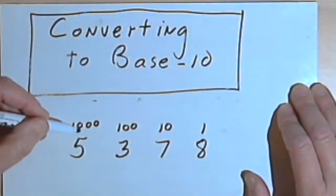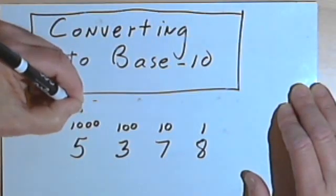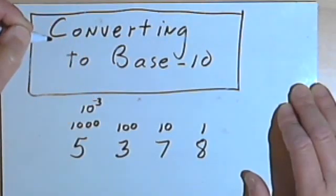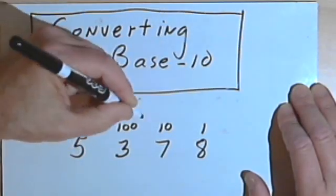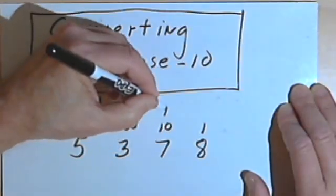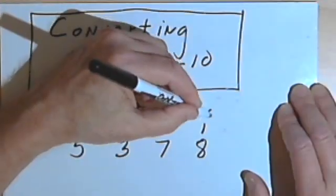Now we can write these numbers, the column names, as powers of 10, powers of our base. So 1000 is 10 to the third, and 100 is 10 squared, 10 is just 10 to the first, and 1 is 10 to the zero.